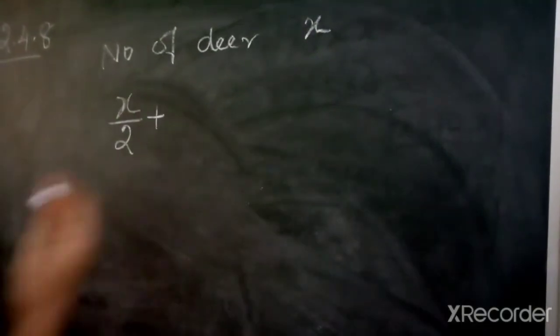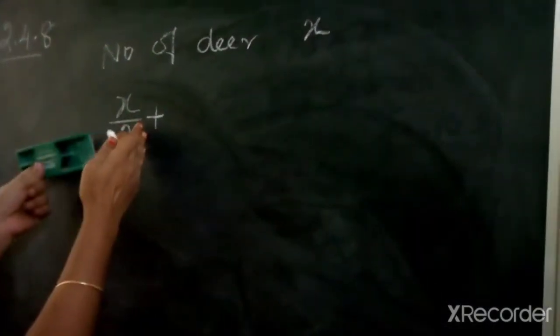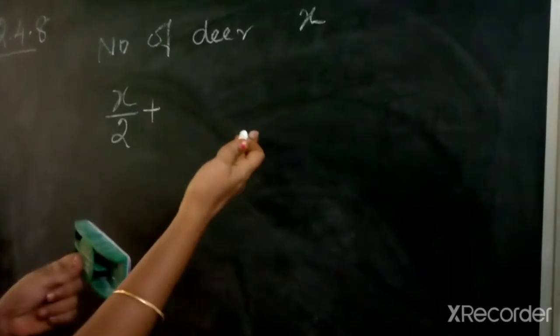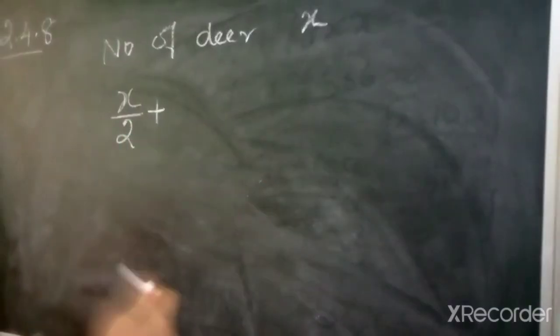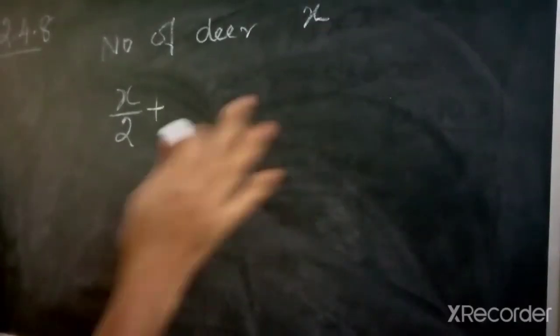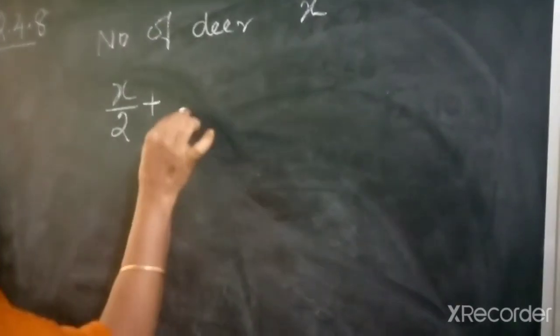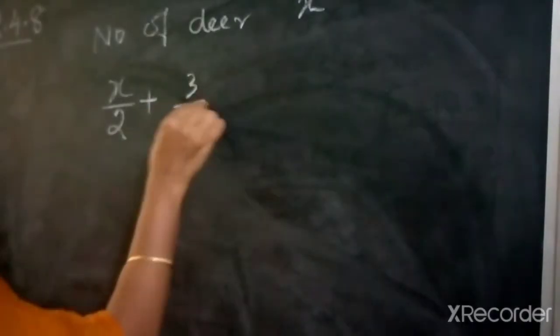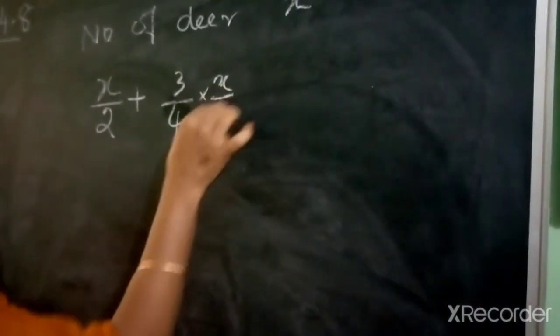Now we have shirt and trouser material for 2 materials. Shirt material is Rs. 50 per meter, trouser material is Rs. 90 per meter.